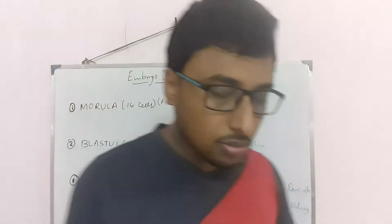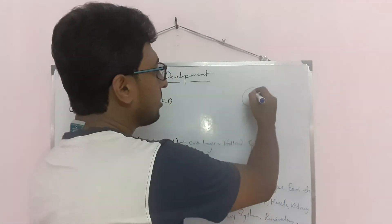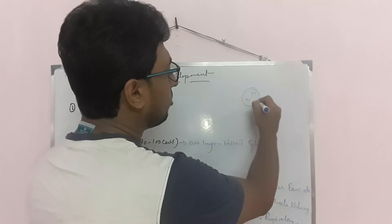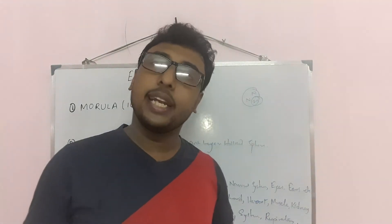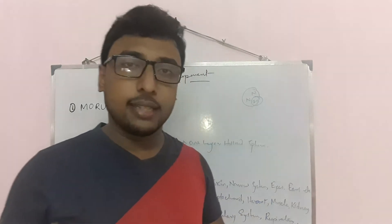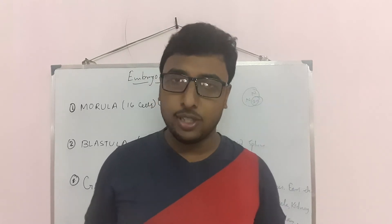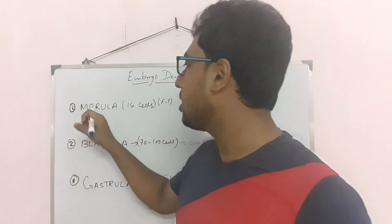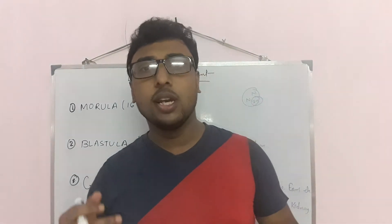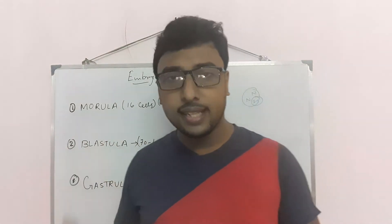Starting with morula: in fertilization, one egg has one nucleus, and the sperm nucleus enters to form the zygote. The zygote will again divide rapidly, forming a cell mass. The zygote undergoes repeated cell division until it forms a structure of 16 to 17 cells — that structure is called morula. It forms within the fallopian tube.